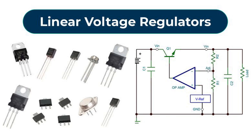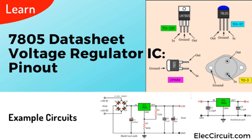What is a voltage regulator IC (integrated circuit) and how does it function? A voltage regulator IC is a type of electronic component used to regulate and stabilize the voltage in an electrical circuit. It ensures that the voltage supplied to a load remains constant, despite variations in input voltage or changes in load resistance.